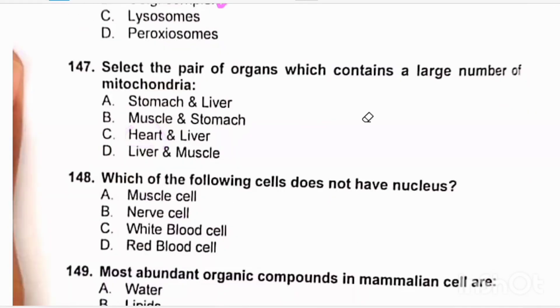Select the pair of organs which contain a large number of mitochondria. In descending order, the presence of mitochondria is basically heart, then skeletal muscle, and then liver. The answer is charlie. It is understood that heart needs more energy for contraction.